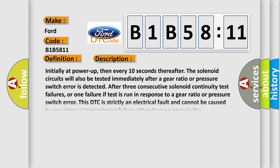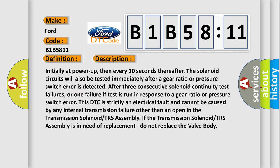And now this is a short description of this DTC code. Initially at power up, then every 10 seconds thereafter, the solenoid circuits will also be tested immediately after a gear ratio or pressure switch error is detected. After three consecutive solenoid continuity test failures, or one failure if test is run in response to a gear ratio or pressure switch error, this DTC is strictly an electrical fault and cannot be caused by any internal transmission failure other than an open in the transmission solenoid TRS assembly. If the transmission solenoid TRS assembly is in need of replacement, do not replace the valve body.